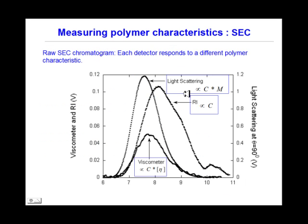Shown next are triple-SEC chromatograms. Each detector responds to different polymer characteristics: light scattering, proportional with concentration and mass; refractive index detector, proportional with concentration; and viscometer, proportional with concentration and intrinsic viscosity.